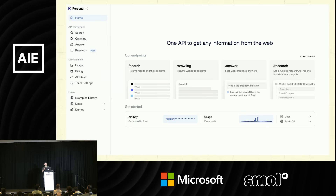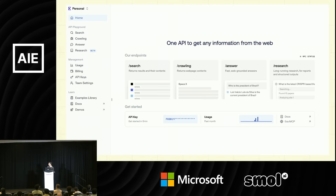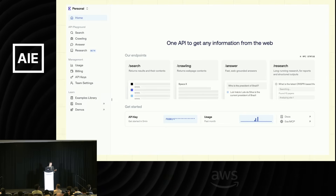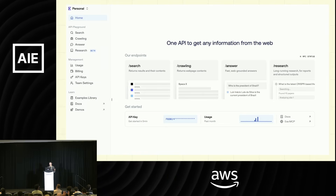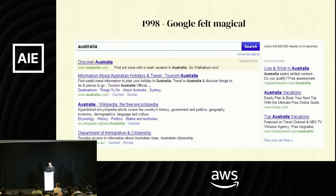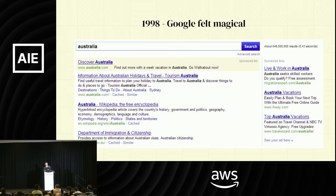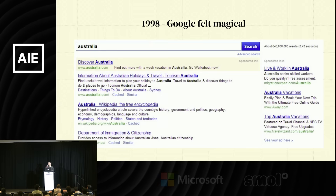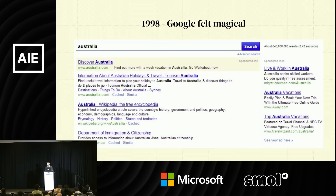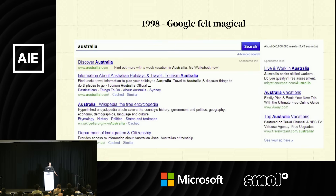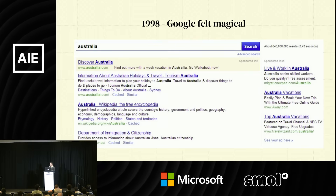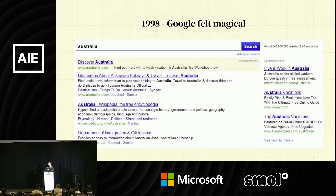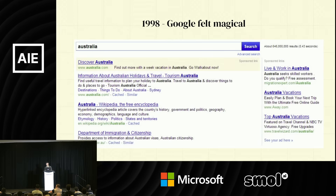This story will end with this slide: one API to get any information from the web, and you'll know what this means by the end. But the story starts in 1998, and what you're looking at is the state-of-the-art in information retrieval in 1998. You type in a word like 'Australia' to this new search engine called Google, and it magically finds you all the documents that contain that word from the web.